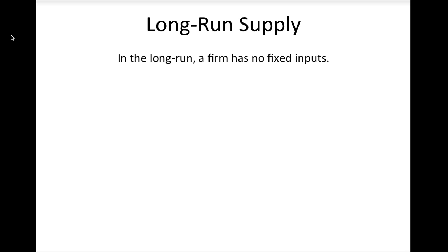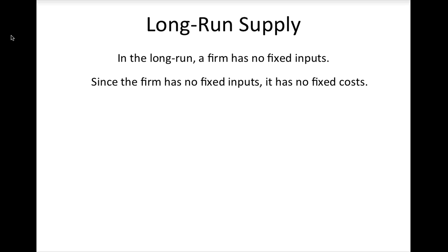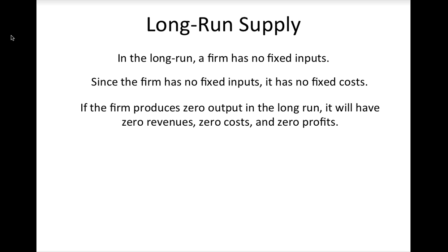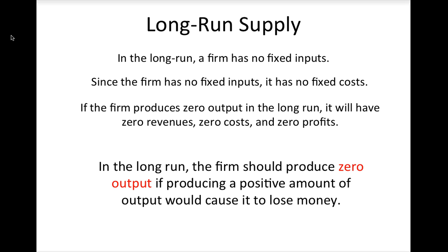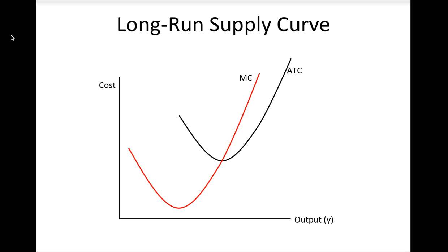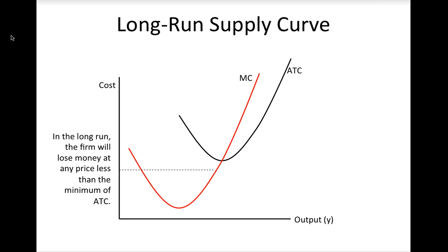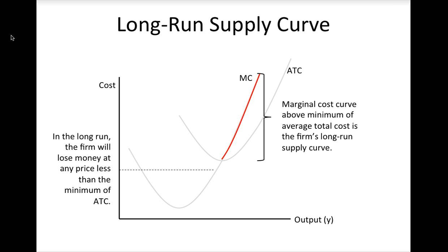In the long run, the firm has no fixed inputs, which means it has no fixed costs. If it produces zero output, it will have zero costs and hence zero profit. Therefore, in the long run, if producing positive output will cause a firm to lose money, the optimal thing for it to do is produce zero output. The firm will be losing money at any price below the minimum of average total cost. Thus, the firm will be willing to produce a positive amount of output as long as the market price is greater than the minimum of average total cost, and the firm's long-run supply curve will be the portion of its marginal cost curve that is above the minimum of average total cost.